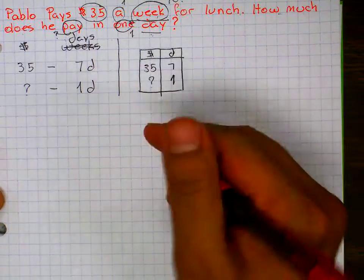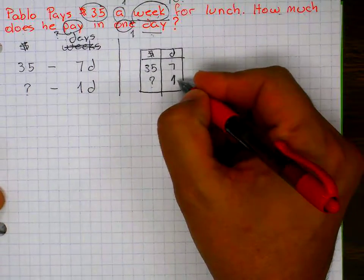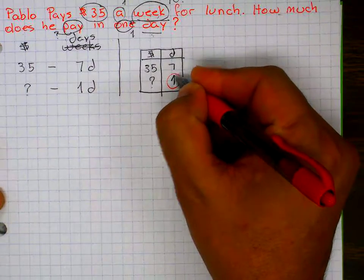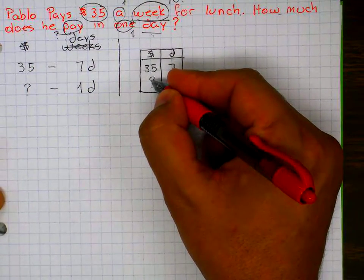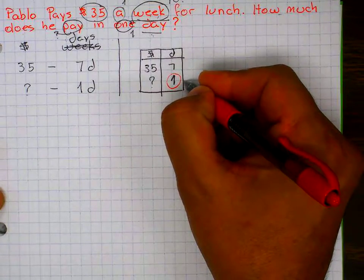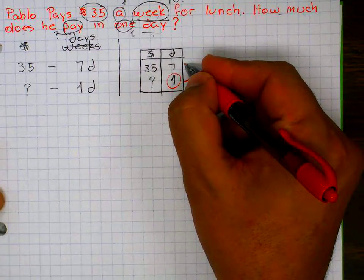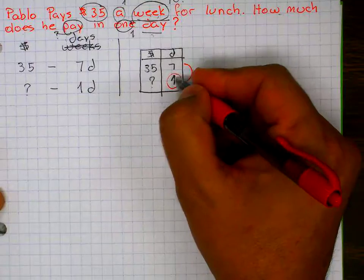Again, what do I always start with? On the number one. Can I go across to the one? No, because I don't know what that number is. How do I go from one to seven? Division. No. From one to seven it's times.